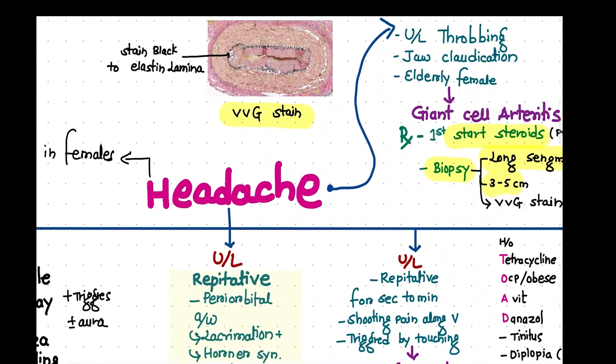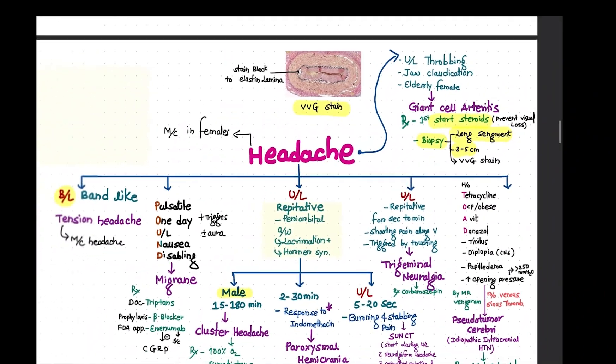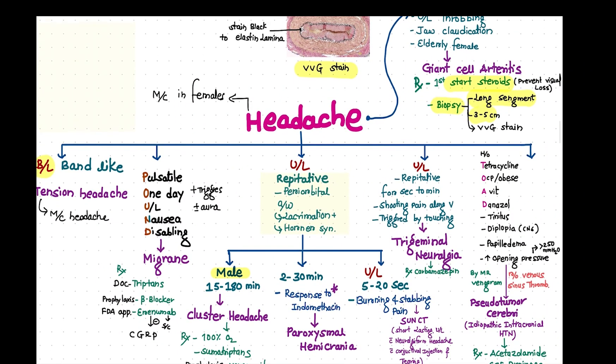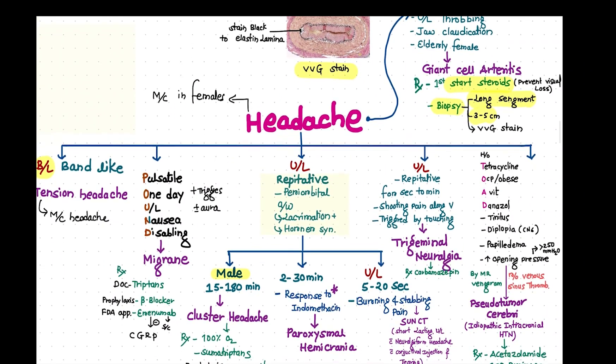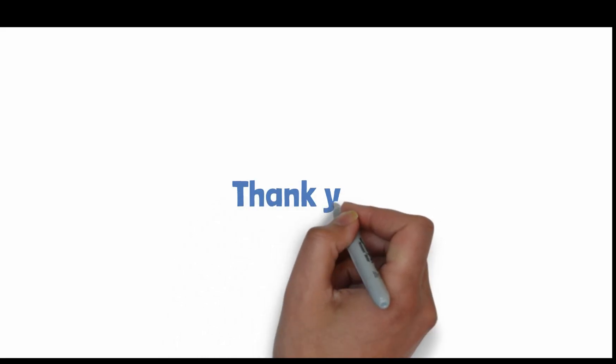Unilateral throbbing headache with jaw claudication — that is the simplifying chart. Thanks for watching and joining me today. If you found this video informative, please give a thumbs up and consider subscribing for more medical insights. If you have any questions or want me to cover a specific topic, please leave a comment below. Stay healthy and I'll see you in the next video.